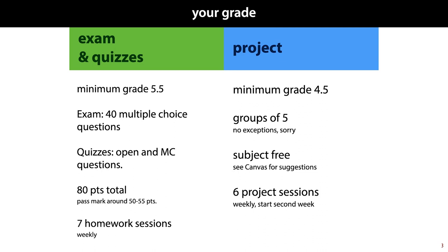The exam consists of 40 multiple choice questions and the quizzes consist of both open and multiple choice questions. In total you can score 80 points, and at the end of the course we simply add up all the points of the exam and the quizzes together. If this total is higher than the pass mark, you pass. The pass mark is set after the exam is graded but it's usually between 50 and 55 points.